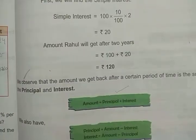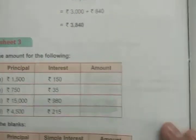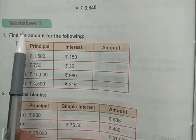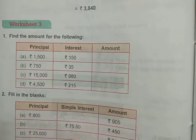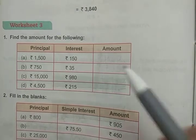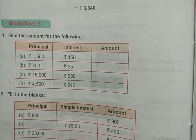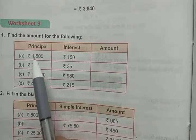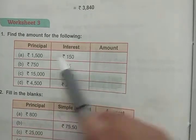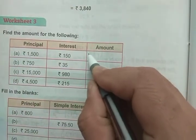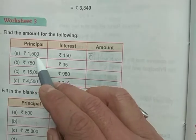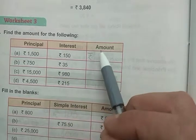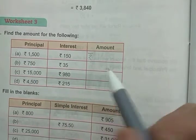Let us understand more by solving questions. We start with Worksheet Number Three, Question Number One: find the amount for the following. Principal and interest are given, and we have to find the amount by adding them. So: 1500 + 150 — the principal was 1500 and interest was 150, so the amount we get back is 1650 rupees.